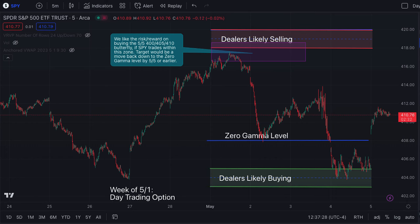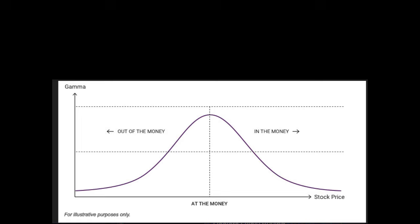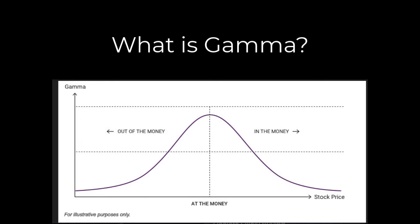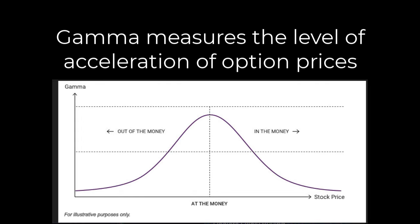We use this gamma data in our trading strategy, so I thought it would be appropriate to show you our conceptual framework for using this data. What is gamma? Gamma is actually a second-order derivative — it's one of the option greeks — and it basically measures the level of acceleration of an option's price based on the change in the underlying stock. If you're familiar with options, you've probably heard of option delta. Delta measures the change in the option price based on the change in the underlying stock price, while gamma measures the acceleration of that change.